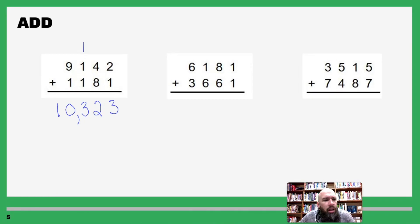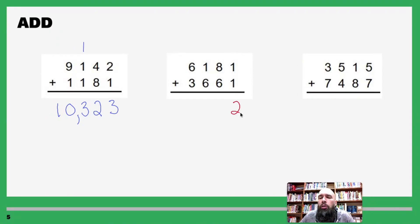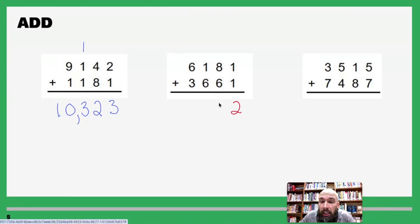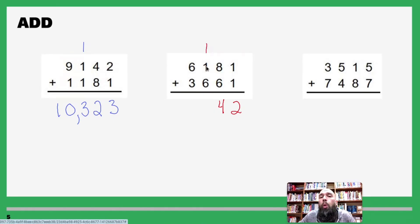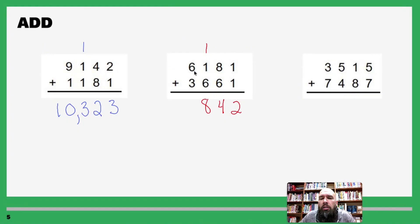See, not so bad — just more numbers to deal with. Let's do it again. Go to your ones: one plus one is two, don't carry anything over. Eight plus six is fourteen, so write out the four and carry the one. One plus one is two, and two plus six is eight — nothing to carry over. Six plus three is nine.